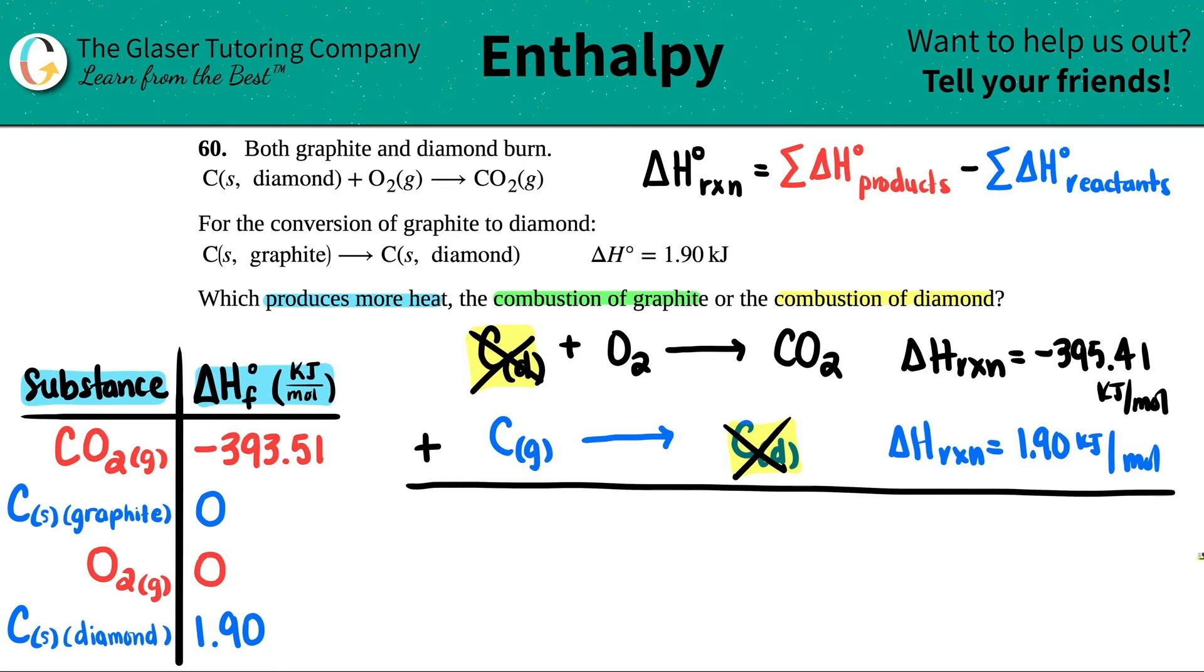If you add these together, if you combine the two formulas together, look what's going to happen. You have graphite plus O2, so carbon graphite plus O2 yields CO2. If you do add the equations together, you have to add the delta H's together. So it would be negative 393.51 plus 1.9. For this one, delta H reaction would be negative 393.51 kilojoule per mole.